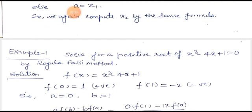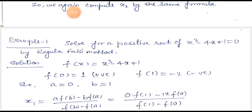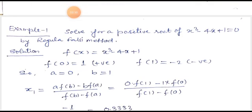Example: find the root of the equation x³ - 4x + 1 = 0 by the Regula Falsi method. Here f(x) = x³ - 4x + 1. When x = 0, f(0) is positive, and f(1) = -2, which is negative. So the root lies between 0 and 1.